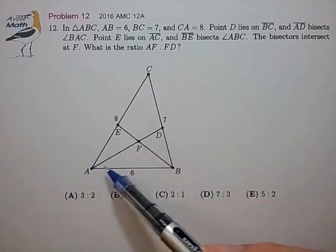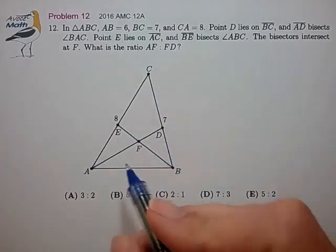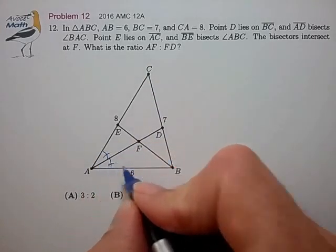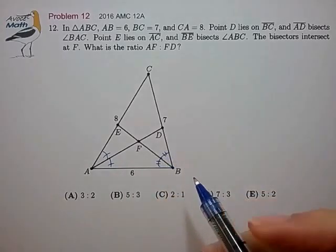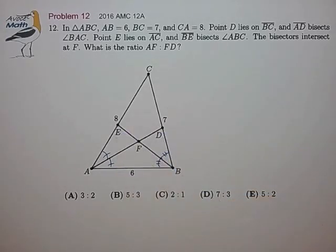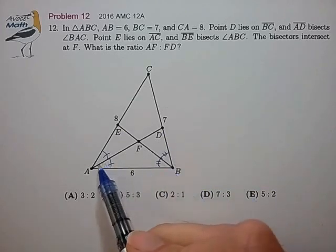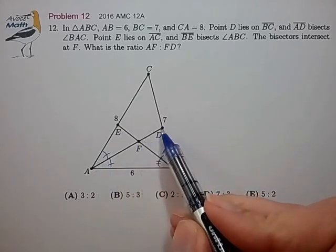Okay, so we have this triangle, we have some angle bisectors, and we have the side lengths. We're trying to find the ratio of AF to FD.